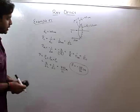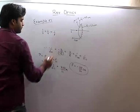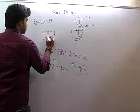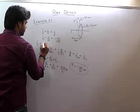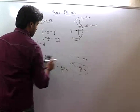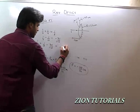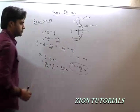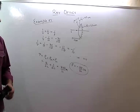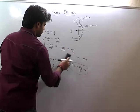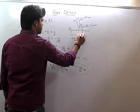Using the mirror formula: 1/v + 1/u = 1/f. Here u = -10 cm and f = -110/21 cm. Solving, 1/v = -21/110 + 1/(-10), which gives 1/v = -11/110 = -1/10. So v = -10 cm, meaning the image is formed 10 cm in front of the lens on the same side as the object.